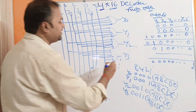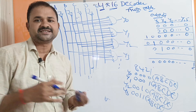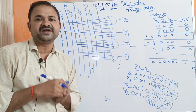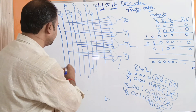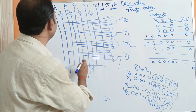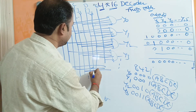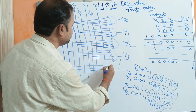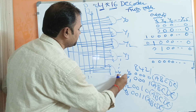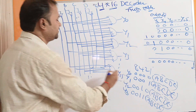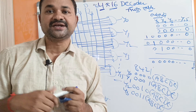Likewise, we can represent the remaining outputs in the same way. Now let us see the last one — Y15. When Y15 is active, the inputs are 1, 1, 1, 1. That means A, B, C, D and enable input E are all connected directly. This AND gate represents Y15. This is about the 4 by 16 decoder.